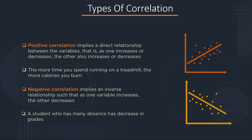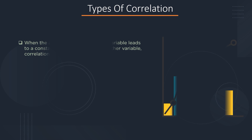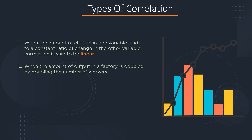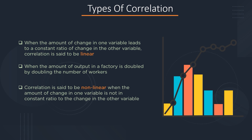Let's move on to discuss linear and nonlinear correlation. When changing the value of a variable leads to a constant ratio change in the other variable, that relationship is said to be linear. For example, a factory doubles its output by doubling the number of workers. On the other hand, correlation is said to be nonlinear when the amount of change in one variable is not in a constant ratio to the change in the other variable. For example, the change in radius of a sphere and the change in volume of the same sphere do not occur in the same ratio.